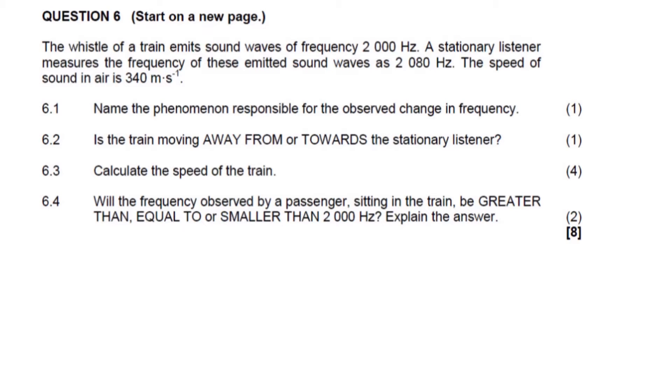Let's look at another exam question on the Doppler effect. The whistle of a train emits a sound wave of frequency 2,000 hertz. This is the frequency of the source, which is the train, the whistle of a train.